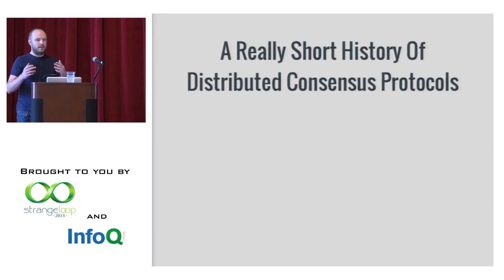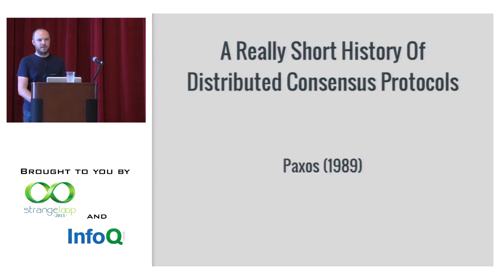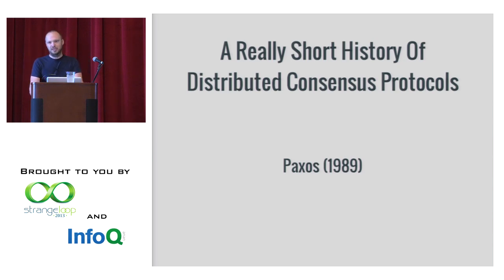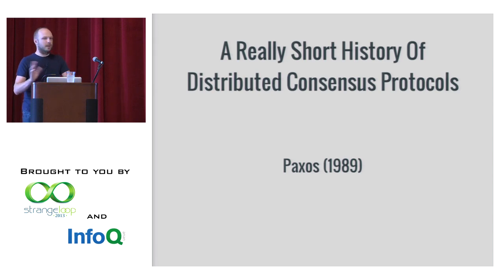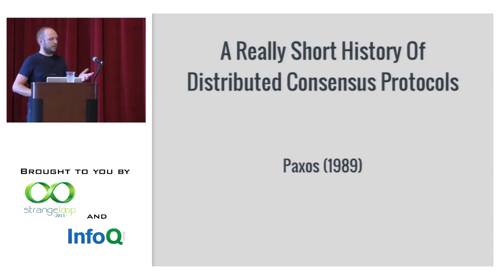If you're talking about actual distributed consensus protocols, it's a really short history. There's basically one everyone talks about, and that's Paxos. There's view stamp replication, which is similar to Raft but not widely used. Another one is Zab, which is used in Zookeeper, but it's pretty much just used in Zookeeper. Paxos was made back in 1989 by Leslie Lamport.